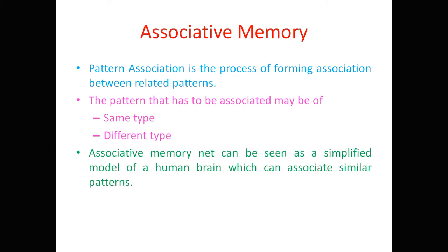An associative memory net can be seen as a simplified model of the human brain which can associate similar patterns. Just as our human brain associates similar patterns — for example, we can see the son of some person and identify his features, recognizing that this person may be the son of someone well known to us — associative memory approximately captures that same property.